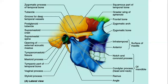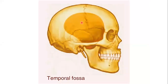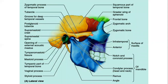The roof of the temporal fossa is formed by the temporal fascia. The floor is mostly occupied by the temporalis muscle, which is a muscle of mastication with a triangular shape. It will be discussed in detail with the muscles of mastication, which is a separate topic. To the zygomatic bone and its lower surface is attached the masseter muscle.